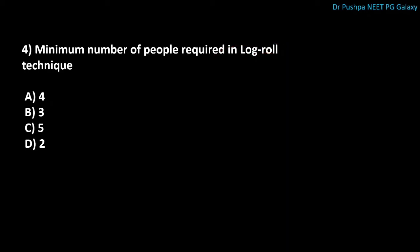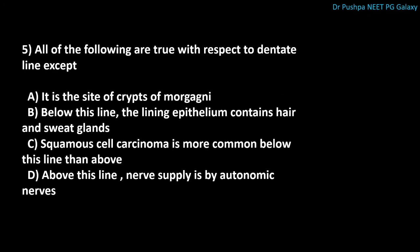The next question is: all of the following are true with respect to the dentate line except. Option A: it is the line of Crypts of Morgagni. Option B: below this line the lining epithelium contains hair and sweat glands. Option C: squamous cell carcinoma occurs here. The correct answer is Option B. The dentate line is the embryonic fusion plane between the proctodeum and the post-allantoic gut.